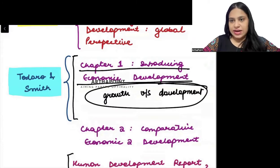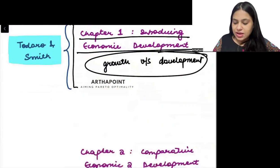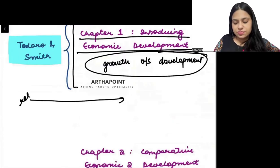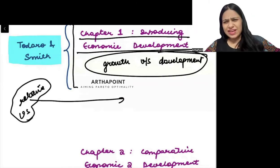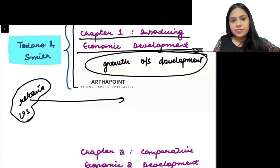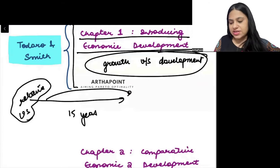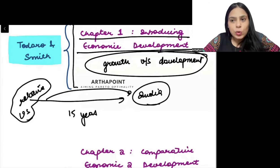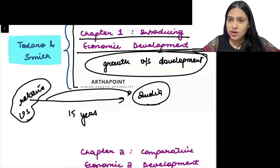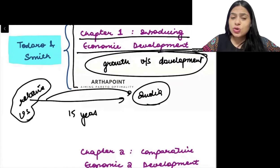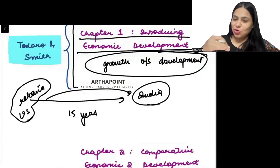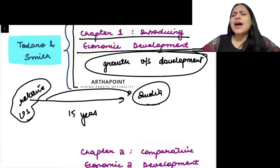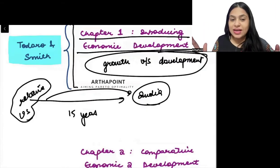The best example I can give you — you will always remember this. Imagine there is a relative who lives in the US, a very distant relation. He is living in the US, and after some 15 years, he visits your place in India. By looking at you, he will say, 'Wow, you have grown so much. You look so tall, so beautiful.' He will be able to see your growth — your height, your weight, which class you are in. That surface-level observation is growth.